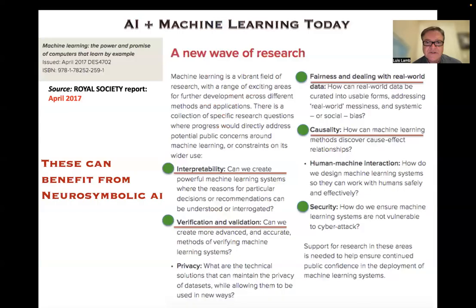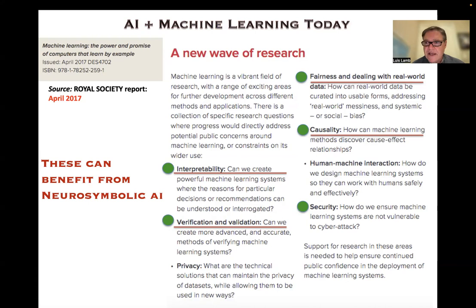Already in 2017, the Royal Society published a significant report on the power and promise of machine learning. Challenges identified by a group of experts included interpretability, verification, validation, causality, human-machine interaction, fairness, and security. We claim that by using Neurosymbolic AI techniques, some of these issues can be positively addressed.